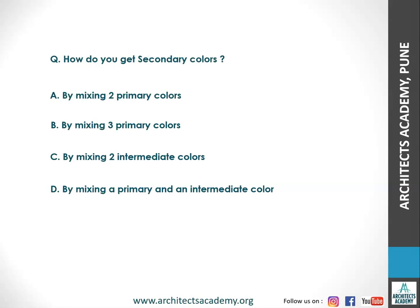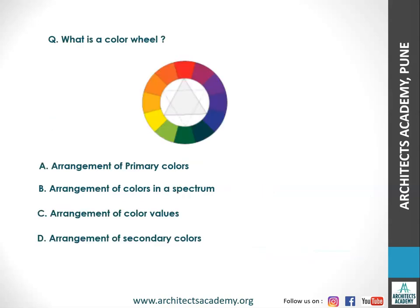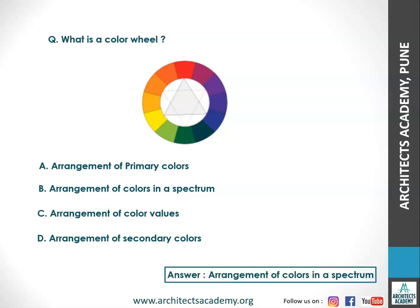Next question: how do you get secondary colors? The right answer is by mixing two primary colors. What is a color wheel? The right answer is the arrangement of colors in a spectrum. All colors — cool and warm — are displayed in a wheel format, and that's why it is called a color wheel.